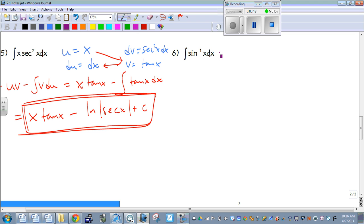So we're going to have to use u and dv with integration by parts to figure this one out. Now there's only two parts here, inverse sine of x and the dx.